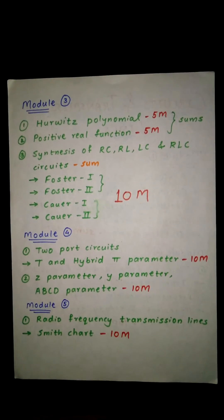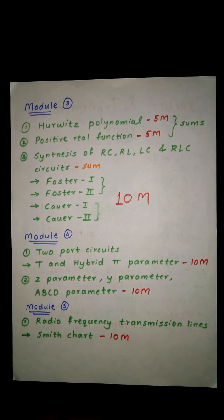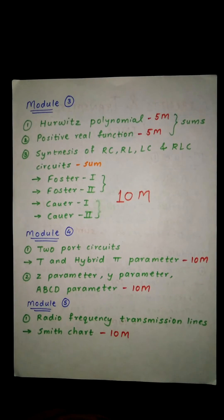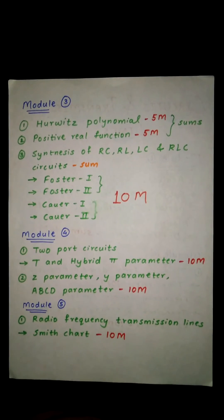From Module 5, that is radio frequency transmission lines, you will get Smith chart. These are all the confirmed questions from which you can easily pass and you can also score in this subject.